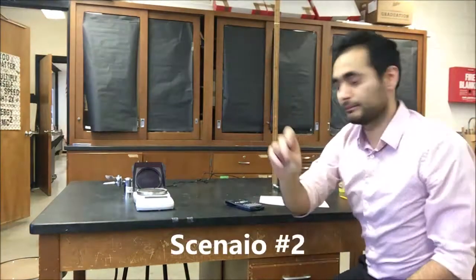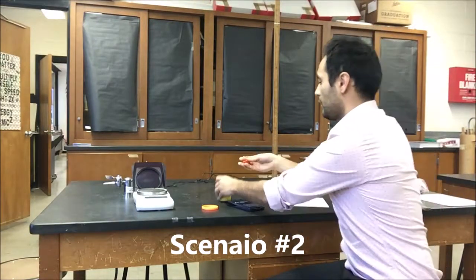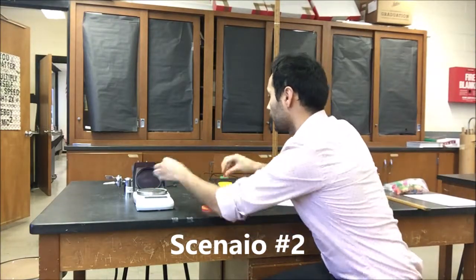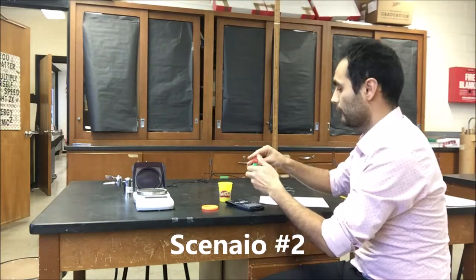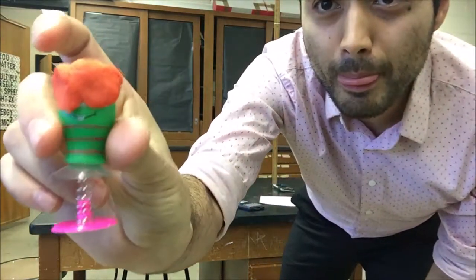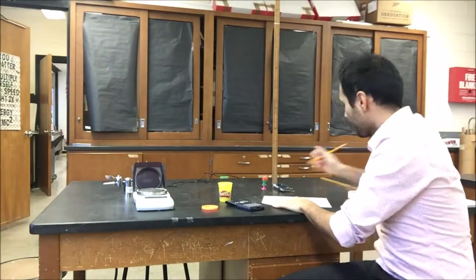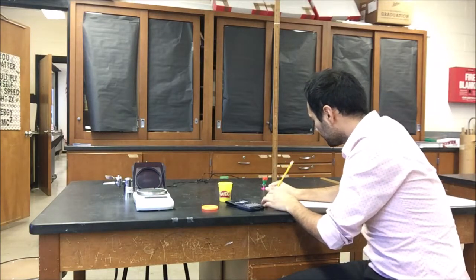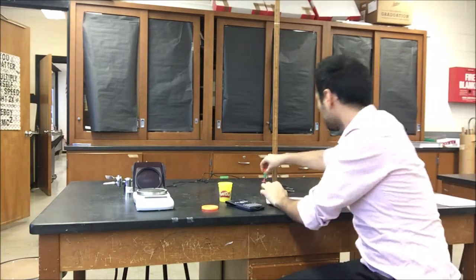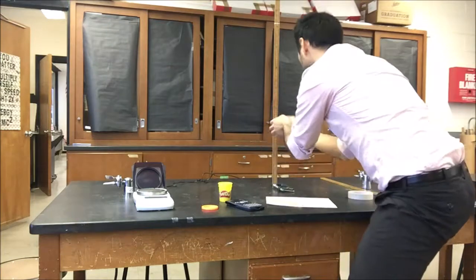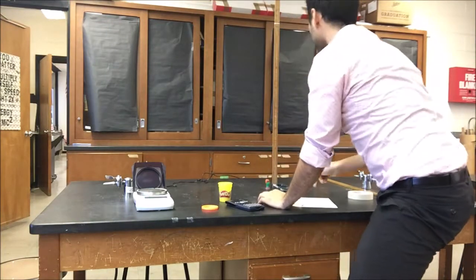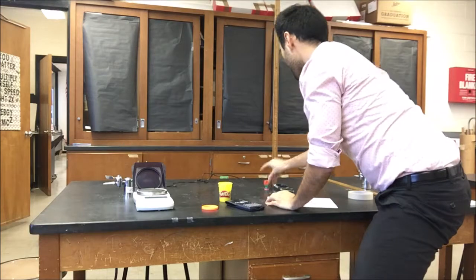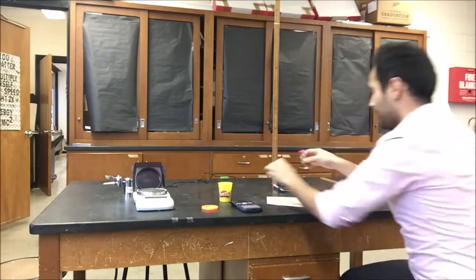And then afterwards, for scenario two, you're going to put some play-doh onto your hopper. So you're going to measure how much mass of play-doh you're putting on the hopper, and then once you have that, you're going to calculate how high should this hopper go with the play-doh on. Once you calculate, you're going to test it out, find the average again, and once you find the average, you're going to find your percent error.